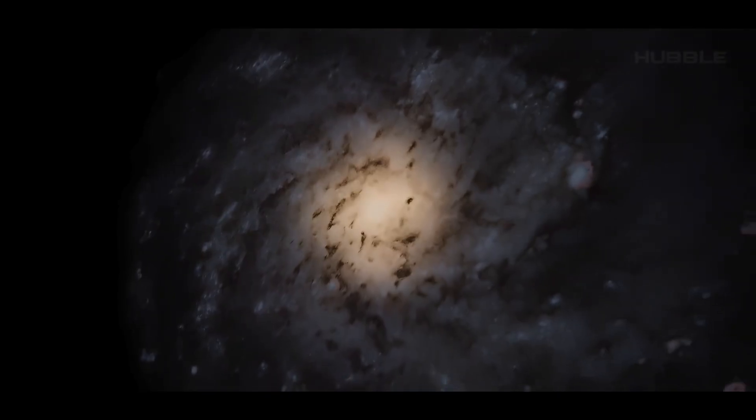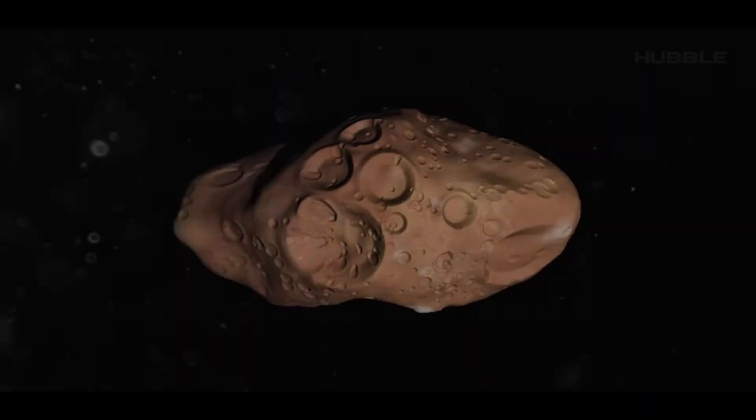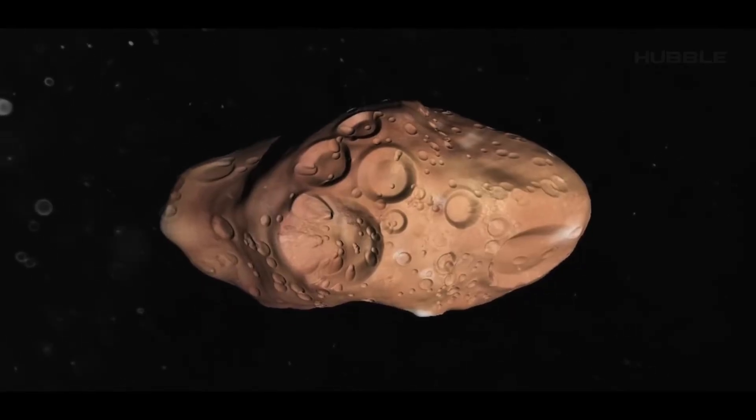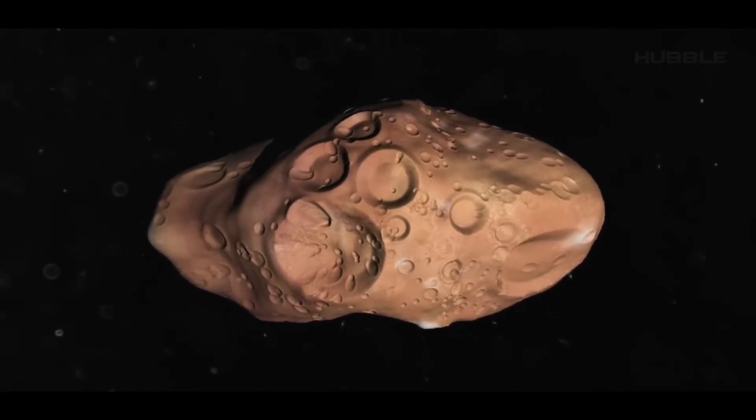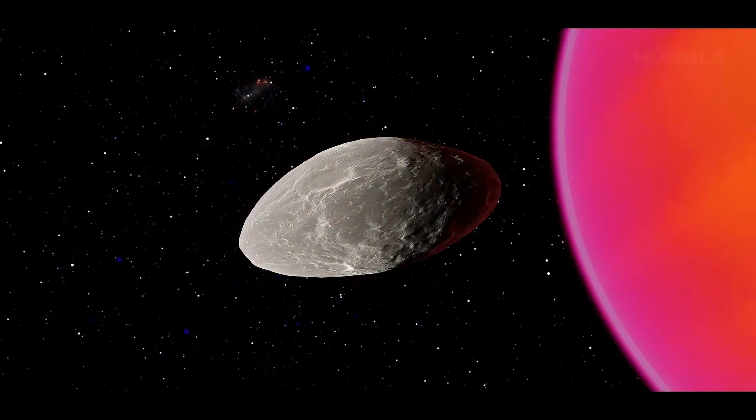The probe managed to capture Amalthea over Jupiter's northern hemisphere, not far from the equator. It is noteworthy that this moon is one of the reddest objects in the solar system.